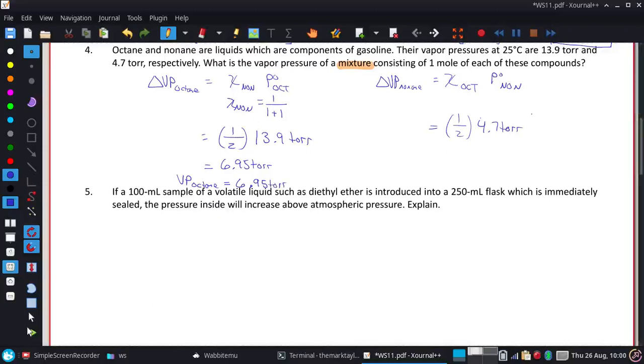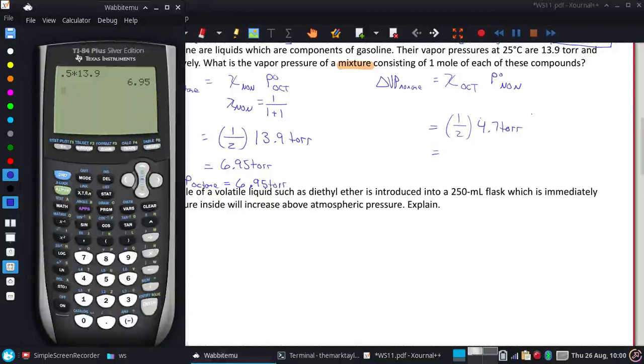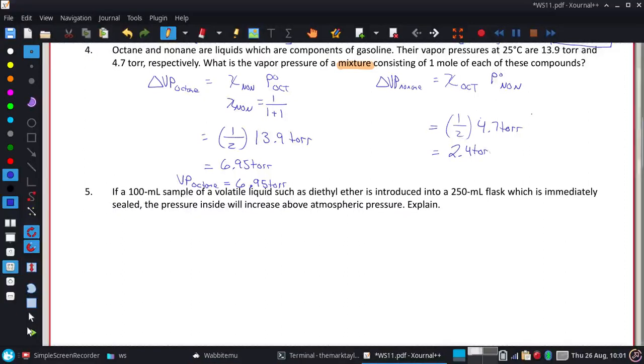All right, I'm going to do the same thing over here with the nonane and half of 4.7. Oops, not 4 comma 7. Excuse me, 2.35. I only have two significant figures here, so 2.4 is what I'll go with, which means that the new vapor pressure of nonane is 2.4.